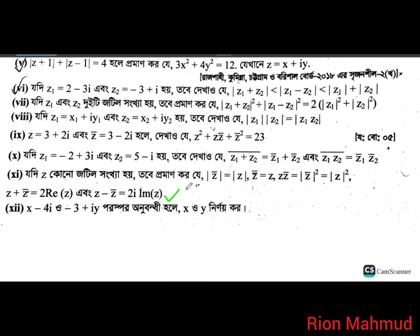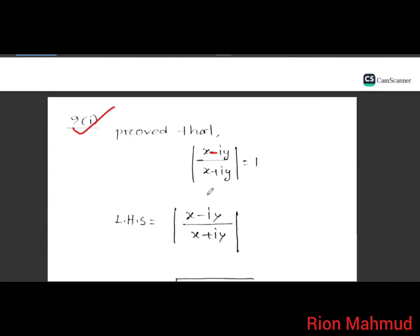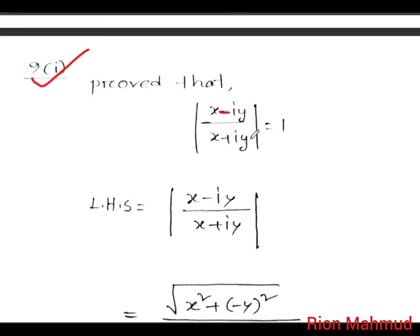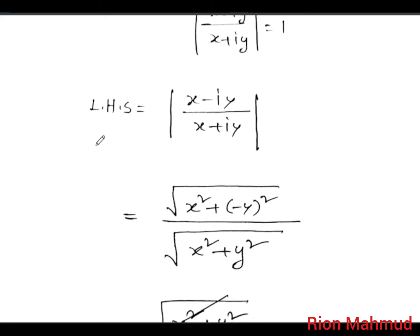We will solve problem number zero. The problem: solve for — modulus of x minus iy divided by x plus iy is equal to 1.